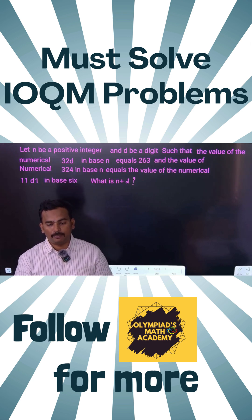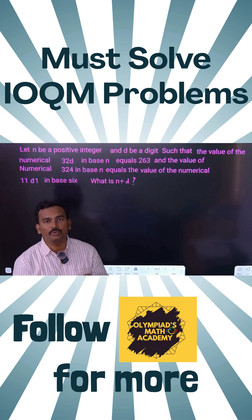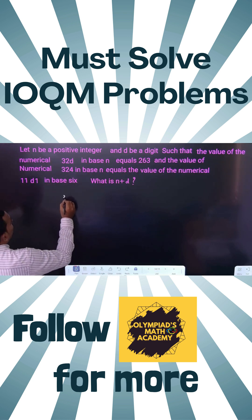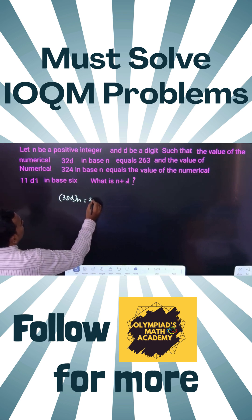Today we will focus on base representation for IOQM. You can see 32d base n equals 263.